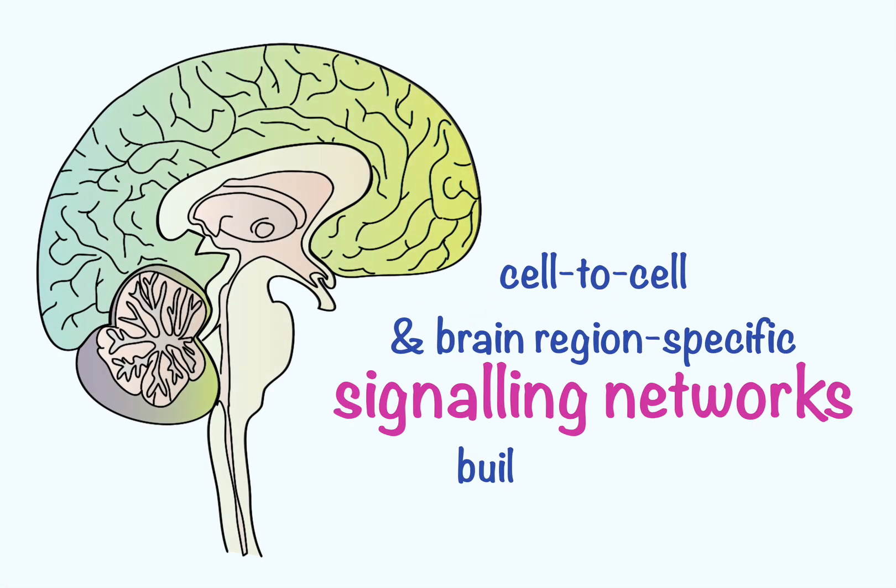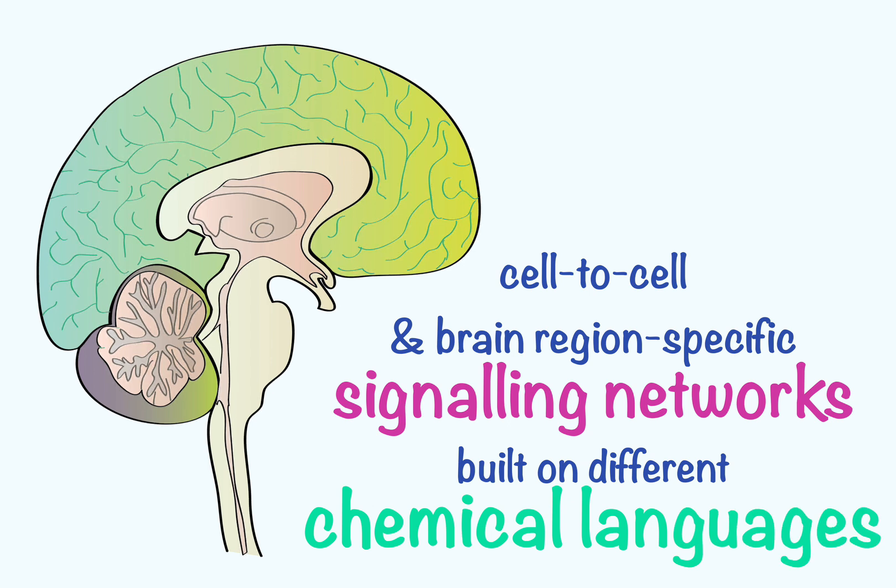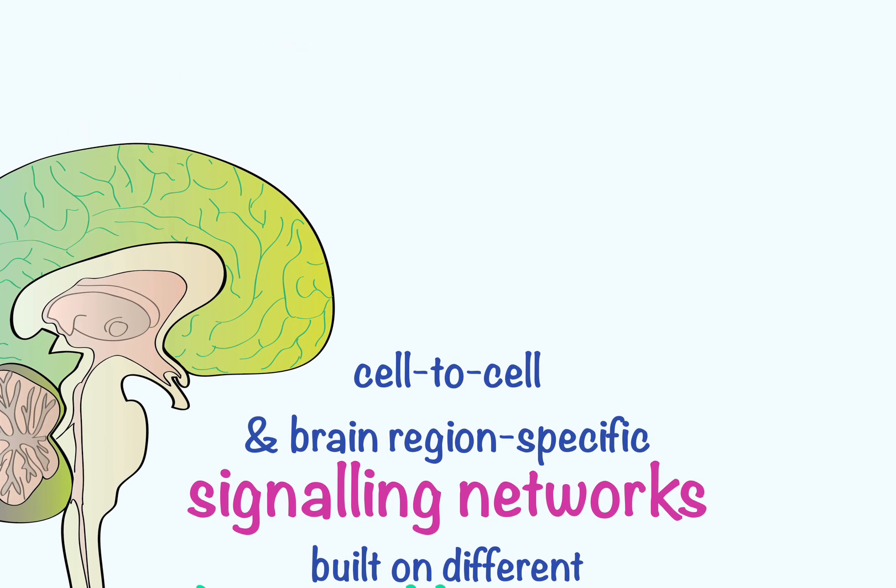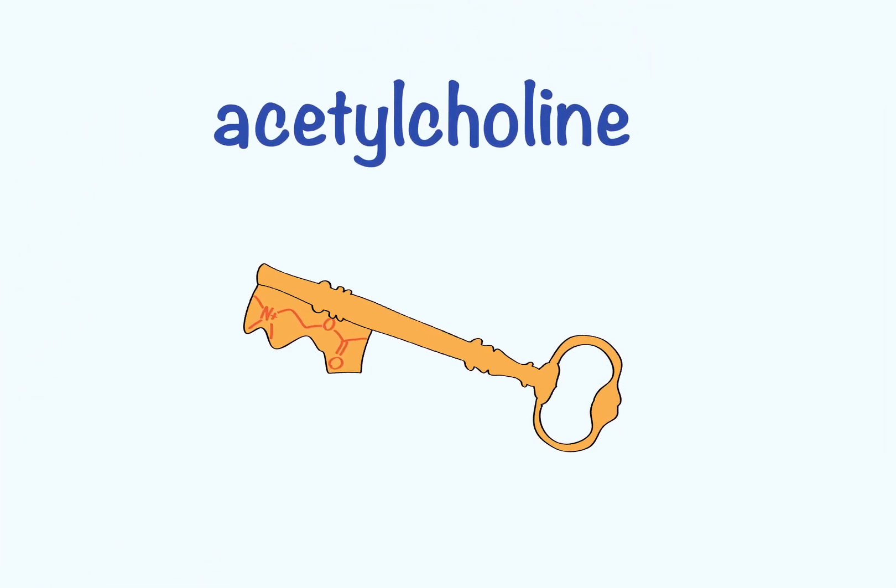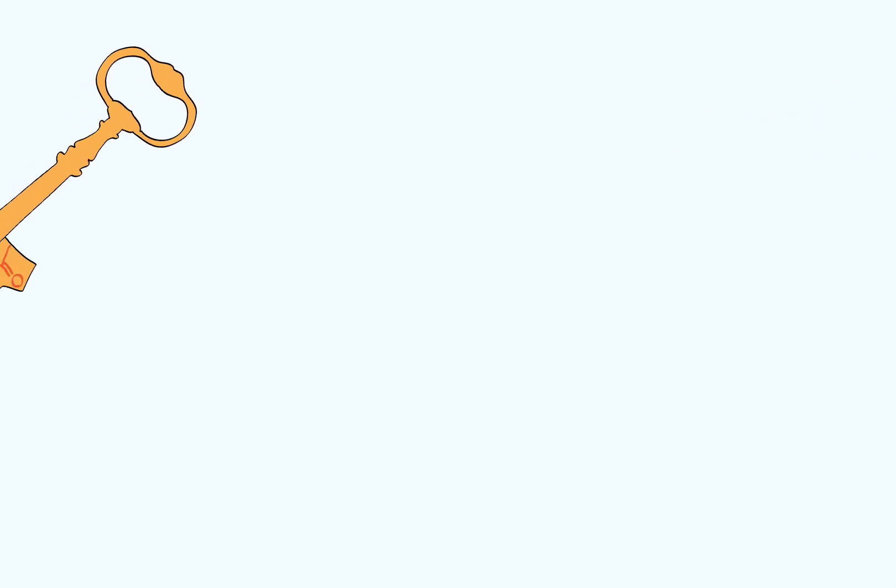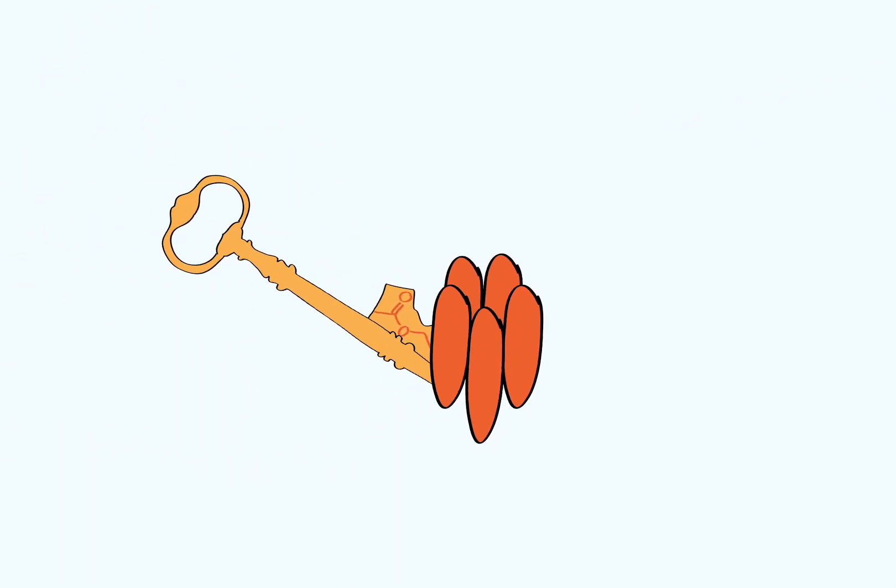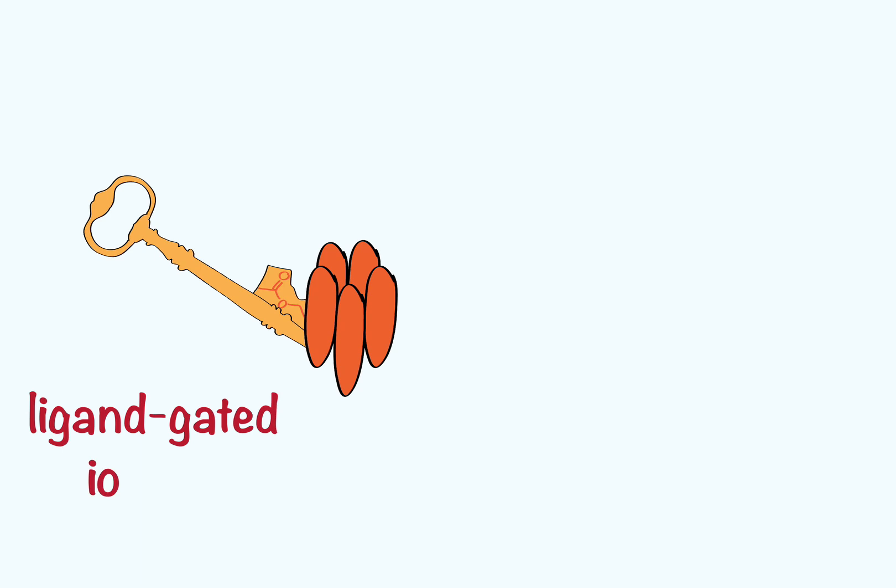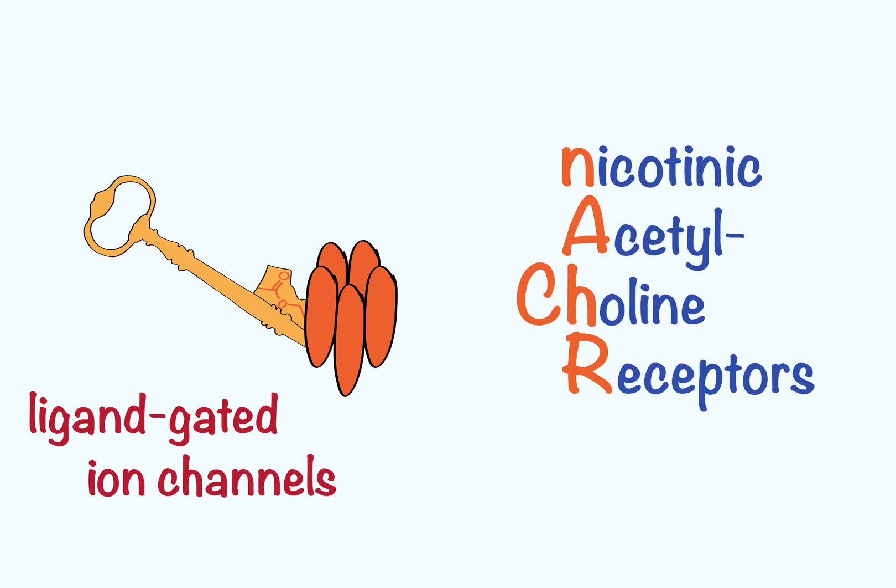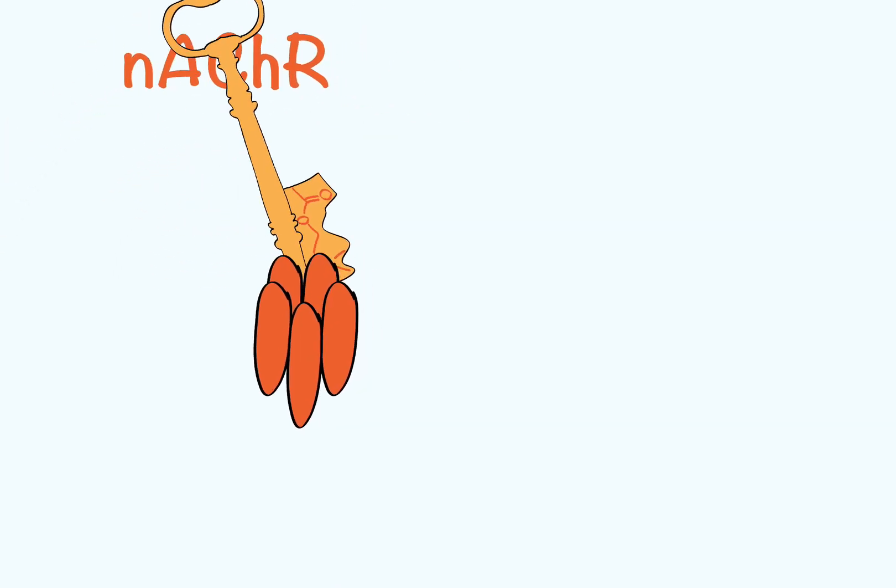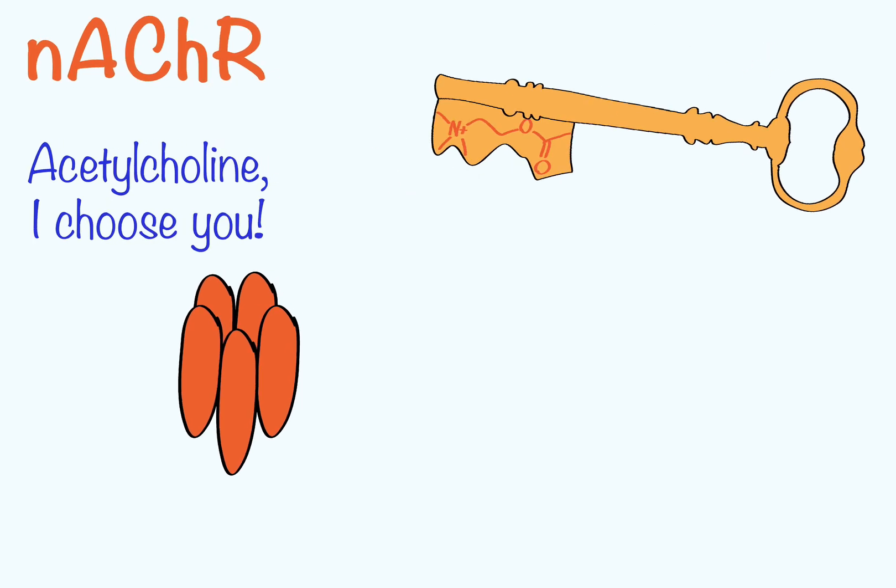This allows for cell to cell and brain region specific signaling networks to be built on different chemical languages. The neurotransmitter acetylcholine is used for fast signaling between cells because its receptor responds quickly when it binds. Acetylcholine binds a family of ligand-gated ion channels called nicotinic acetylcholine receptors. These receptors naturally bind acetylcholine, but as their name suggests, they can also bind and be activated by nicotine.